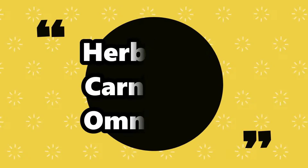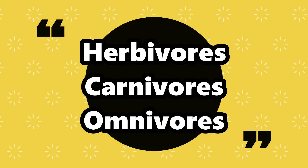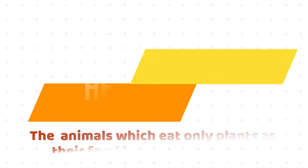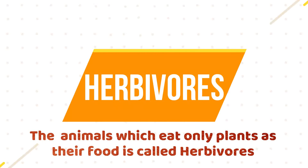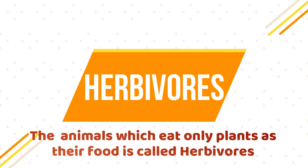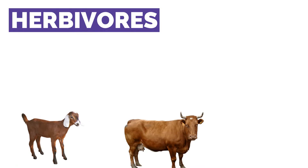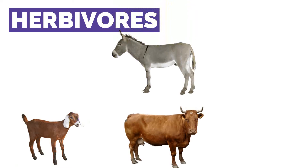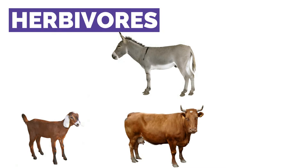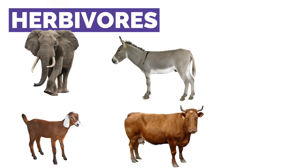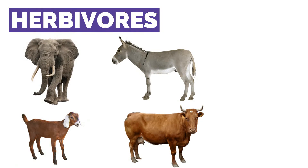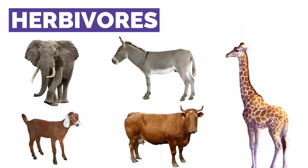The difference between Herbivores, Carnivores and Omnivores. Herbivores: The animals which eat only plants as their food are called Herbivores. For example, Goat, Cow, Donkey, Elephant and Giraffe.